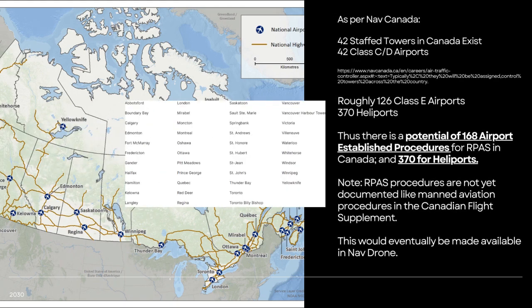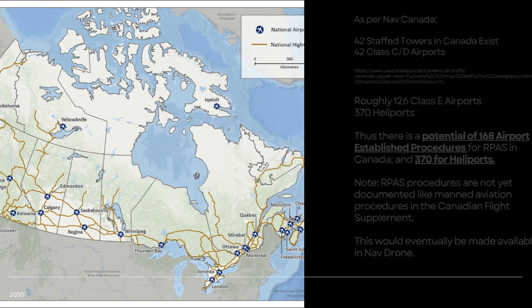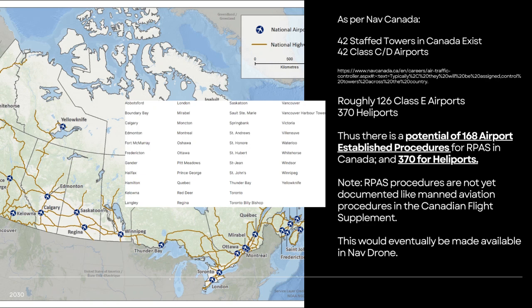Some of you may ask how established procedures or traffic patterns can affect your operation. According to Nav Canada's website, there are 42 staffed towers in Canada, roughly meaning 42 Class C or D airports where airport operations or management controls. Factoring in 126 Class E airports and 370 heliports, there is a potential of 168 airports with established procedures, plus 370 heliport established procedures. These RPAS procedures are not yet documented like manned aviation procedures in the Canadian Flight Supplement.